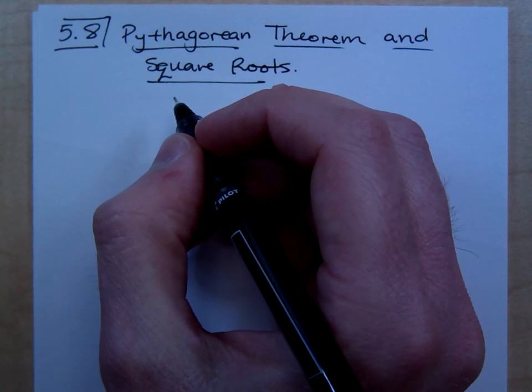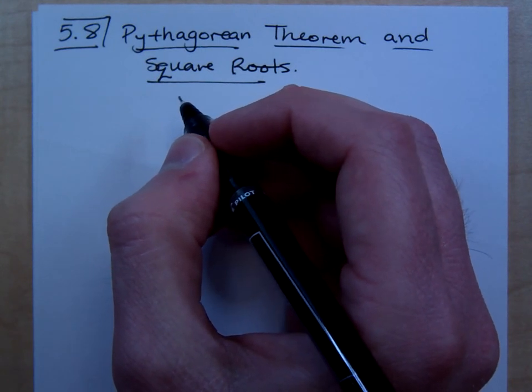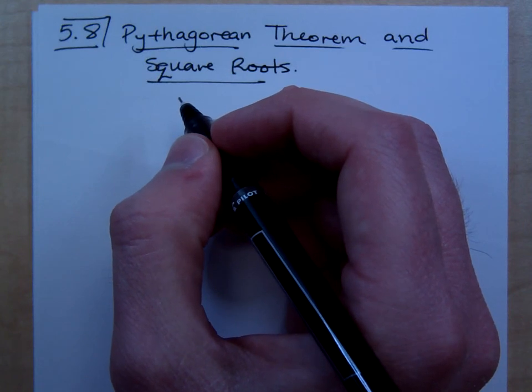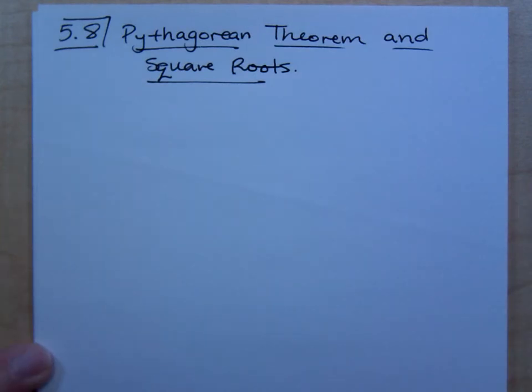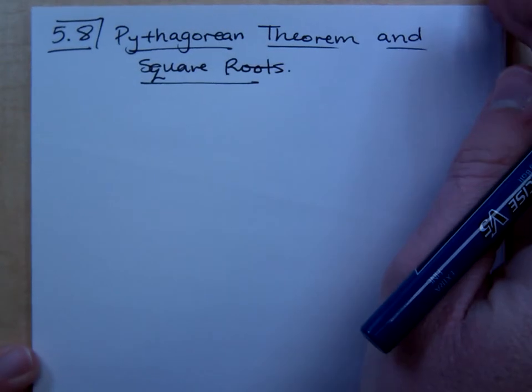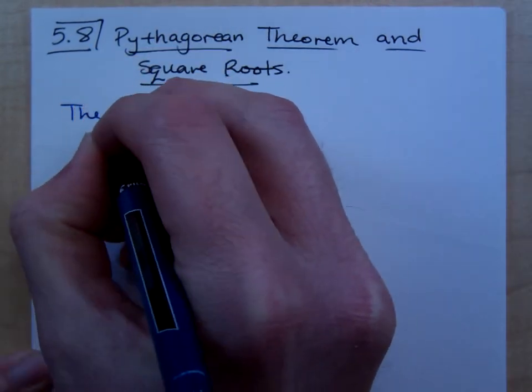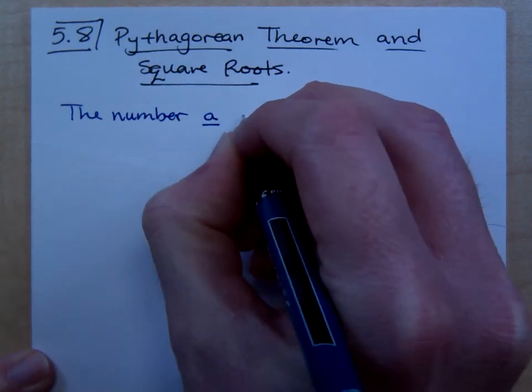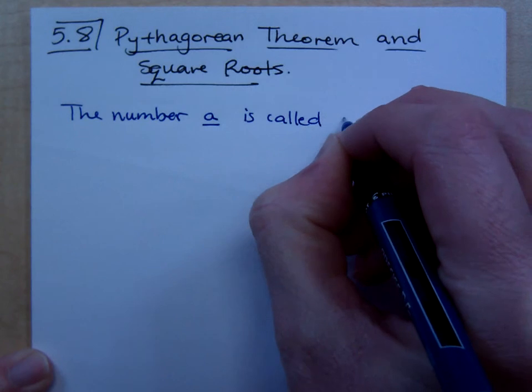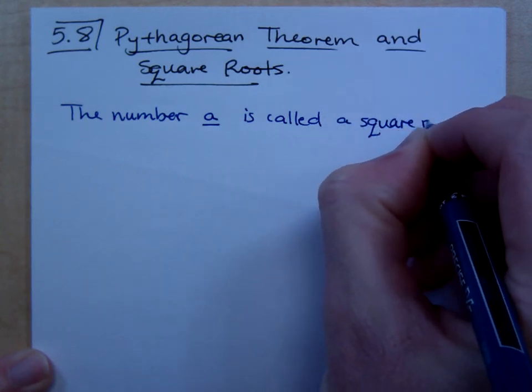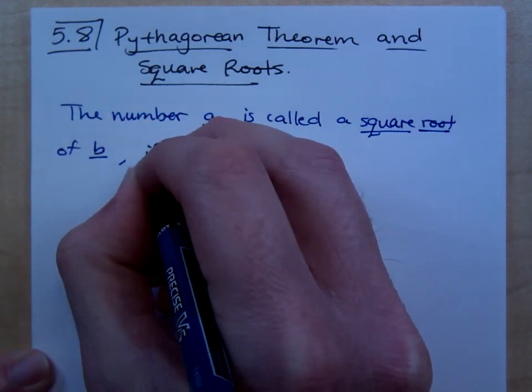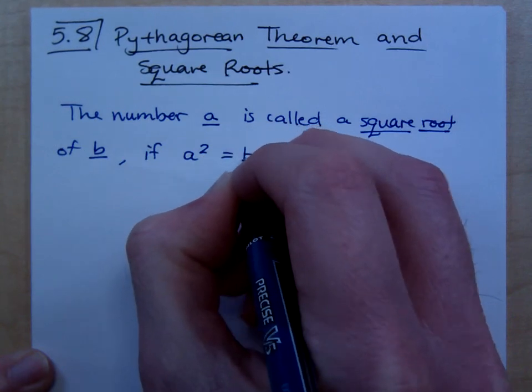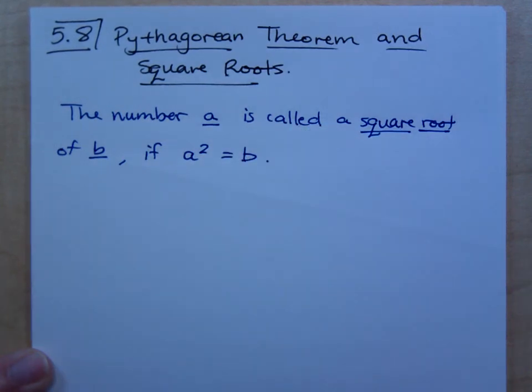So in this section, we're talking about some geometry applications. We're going to talk about the Pythagorean theorem, we're going to talk about square roots. I'll give you guys the same kind of definition that I would give my 0310 students. The number a is called a square root of b if a squared equals b. The number a is called a square root of b if when you square that number you get b.